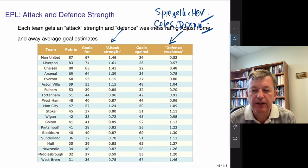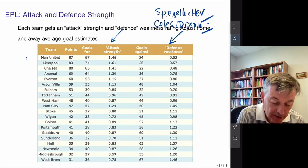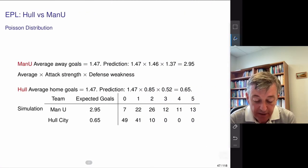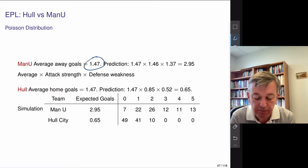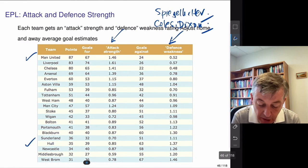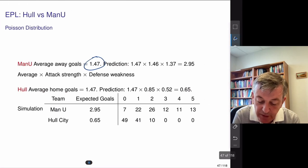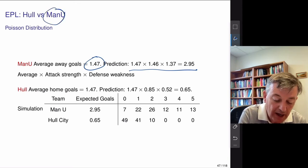For each team, you find an attack strength and a defense weakness. For a Man United versus Hull example: the average number of away goals is about 1.15 to 1.47. If I look at Man United's attack strength and Hull's defense weakness of 1.37, and put it all together — if Man United is playing away at Hull — you can calculate the expected lambda for goals scored.